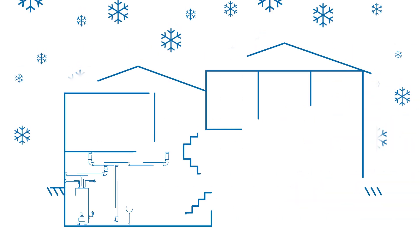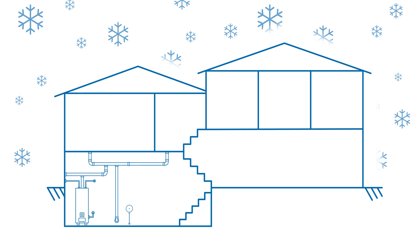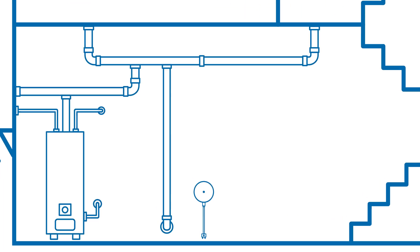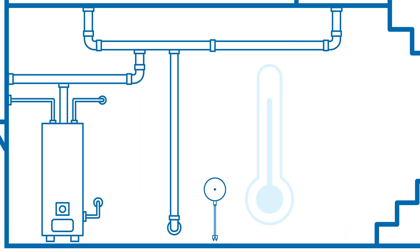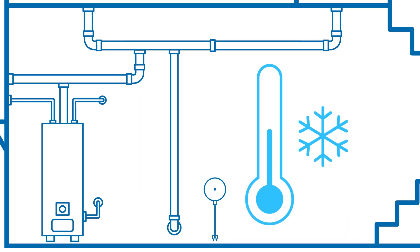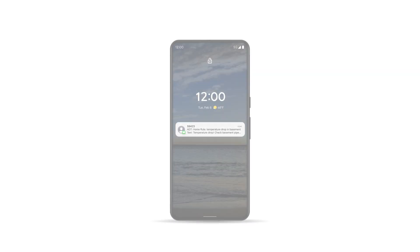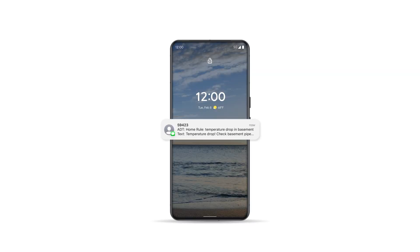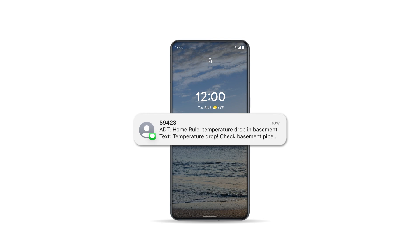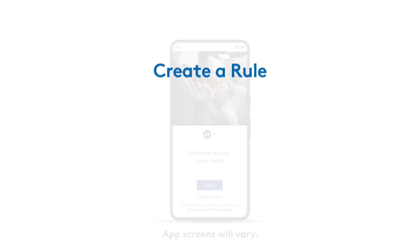Imagine getting an alert the moment your ADT water and temperature sensor detects a sudden drop in temperature, alerting you to act fast so you can protect your basement pipes from freezing. Let's make this rule.